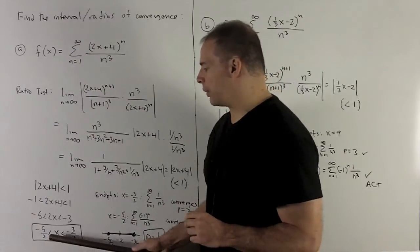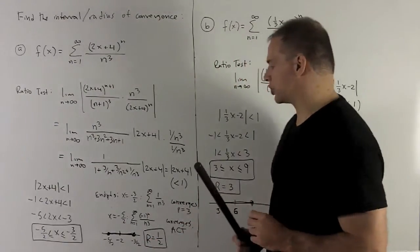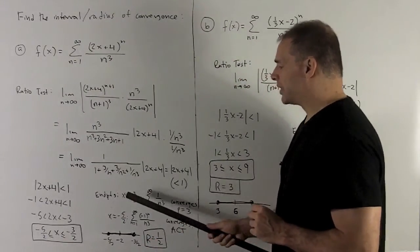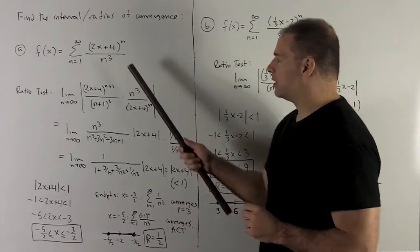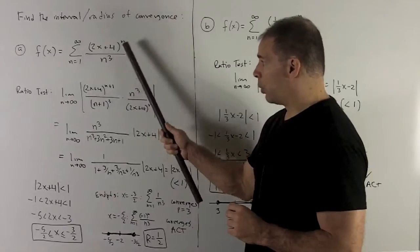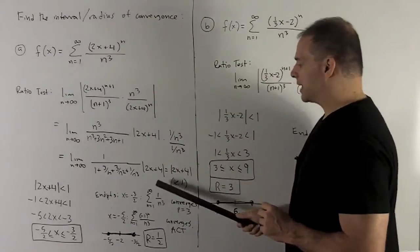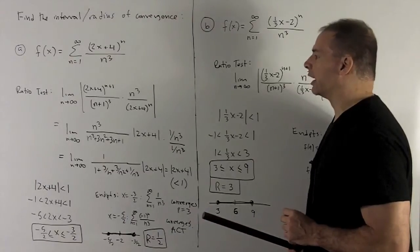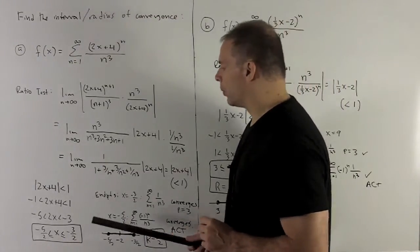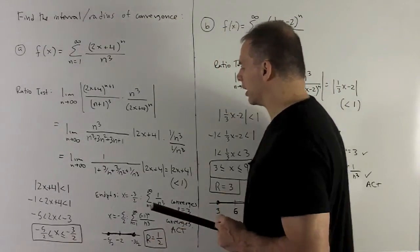Okay, we have to check the endpoints to see how we get those equalities into the picture. If I check x equal to minus 3 halves, well, then we're going to be looking at the series for 1 over n cubed. And that's definitely going to converge. That's going to be a p series with p equal to 3. So we're going to get this equality here.